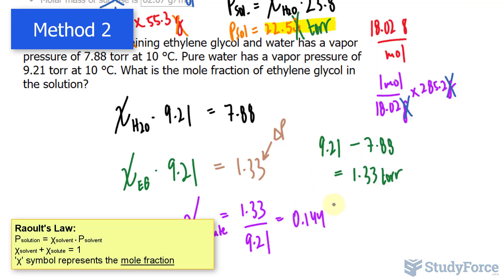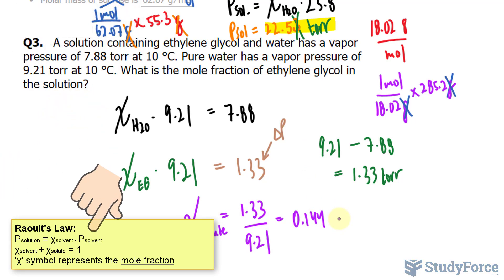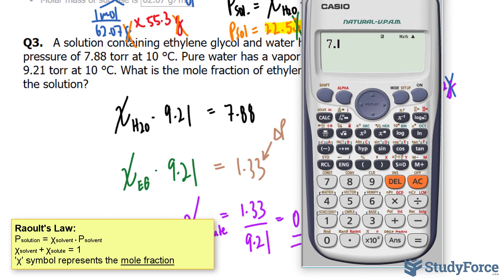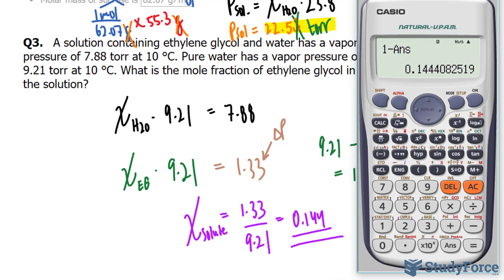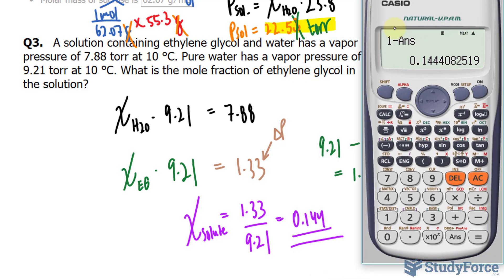A second method to doing this would have been to solve for the molar fraction of the solvent. And then using the formula here, we could have easily solved for the solute by subtracting that number from 1. Let me show you. 7.88 by 9.21, you should end up with a number that looks like this. Subtract 1 from this number, that gives you 0.144, which is exactly what we found earlier.